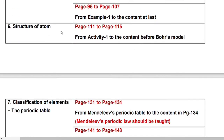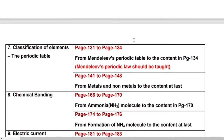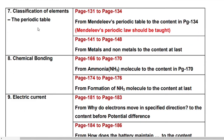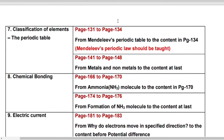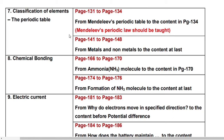The next chapter is Structure of Atom: page number 111 to page number 115 from activity 1 to the content before Bohr's model. Next, the 7th chapter, Classification of Elements — the Periodic Table — from page number 132 to page number 134, from Mendeleev's periodic table to the content on page number 134. Mendeleev's periodic table should be taught and you have to learn it. Also, page number 141 to 148 from metals and non-metals to the content at last.